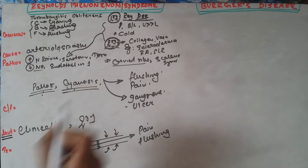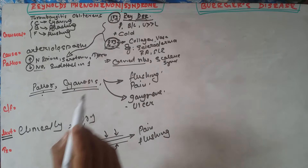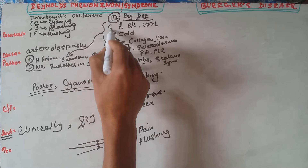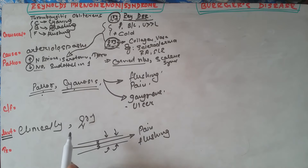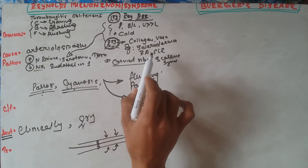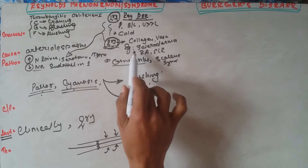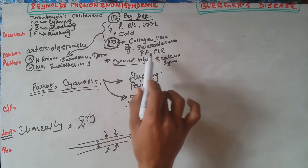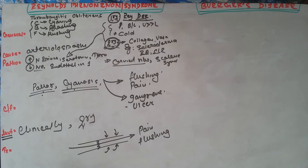Primary Raynaud's disease is usually clinically diagnosed by looking for features such as bilateral involvement, female patient, and cold exposure as a predisposing factor. For the secondary type, investigations should be sent accordingly for rheumatoid arthritis, SLE, and scleroderma, as the disease presentation can vary.